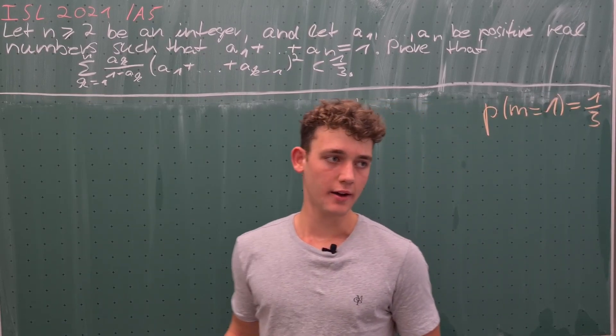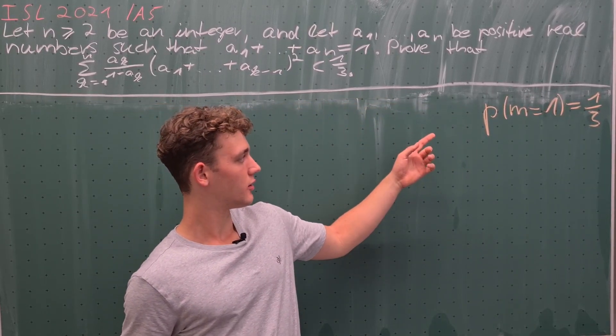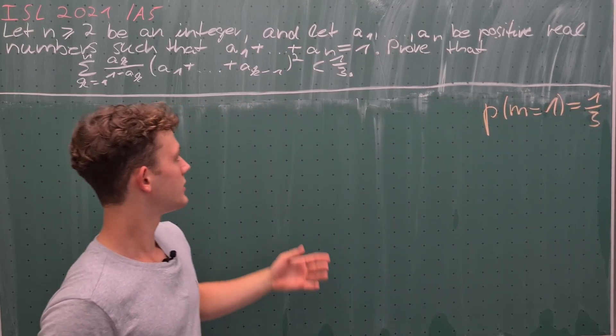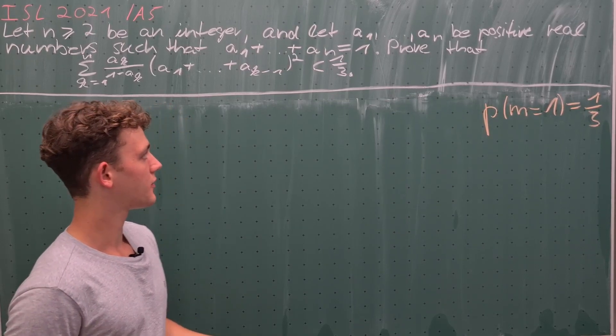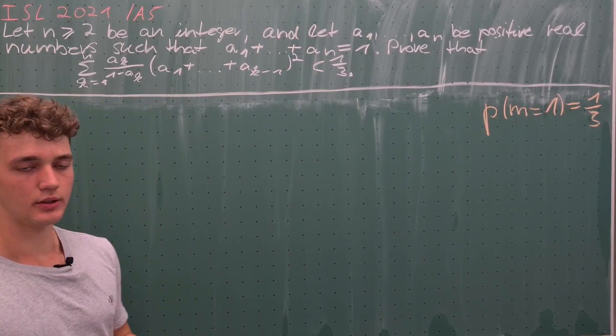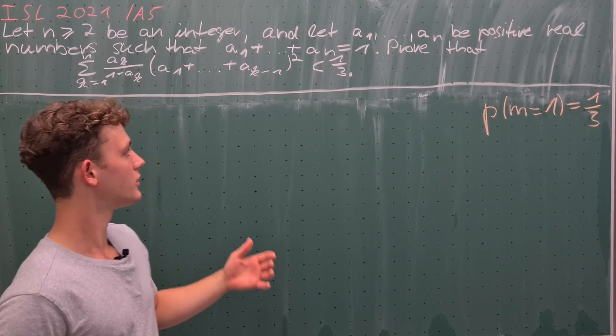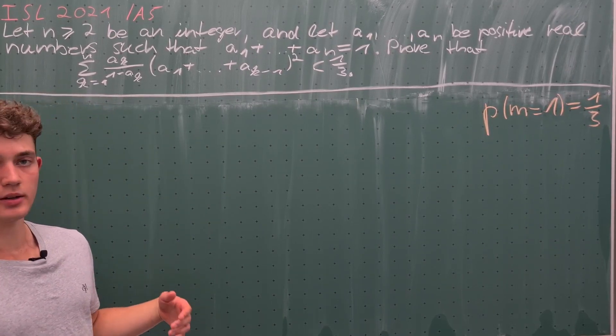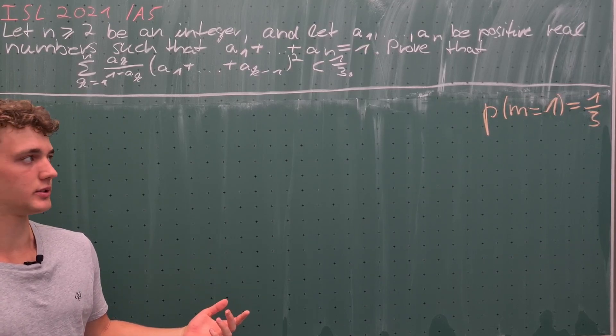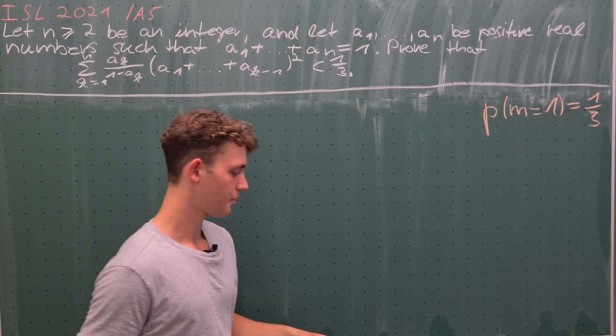So now we have established that P of m equals one is exactly one third. This is already the right-hand side of our inequality, and we have to now somehow use what we've already done to really prove it. So what we will now do is to evaluate the probability that m equals one in another way.